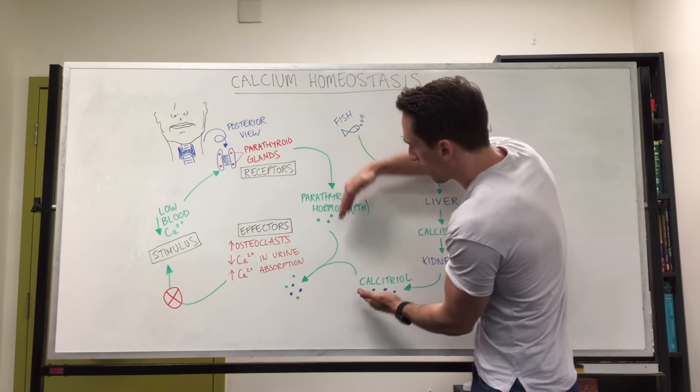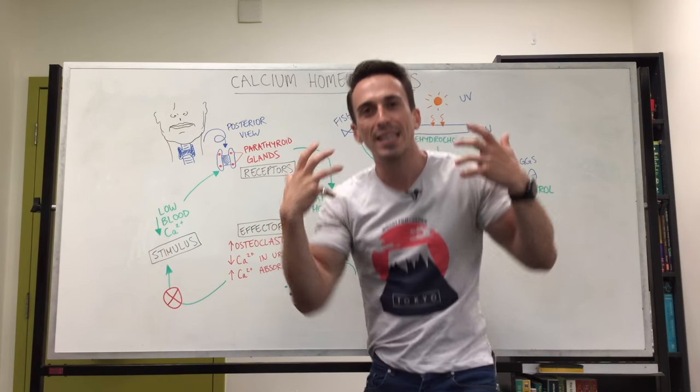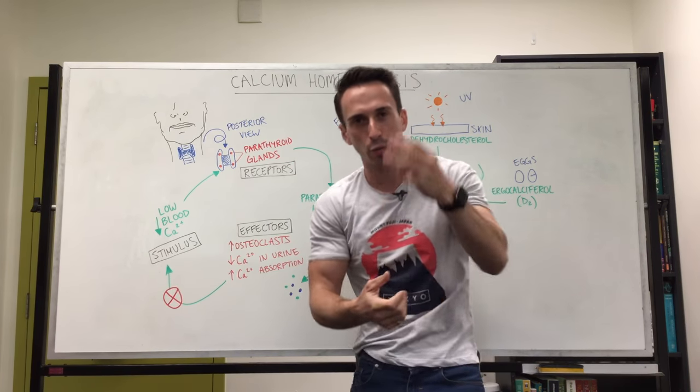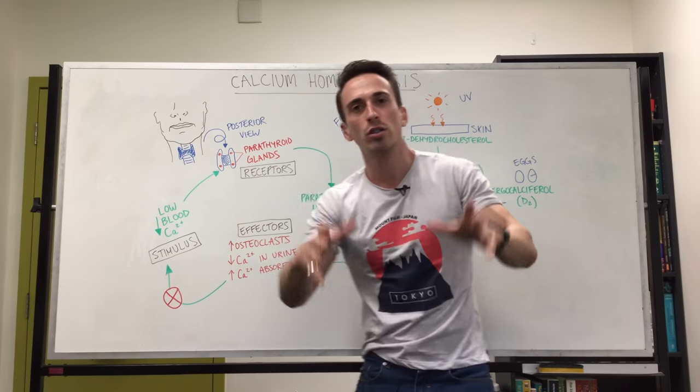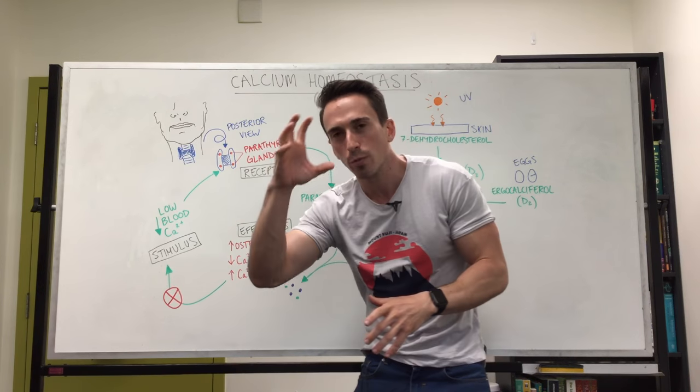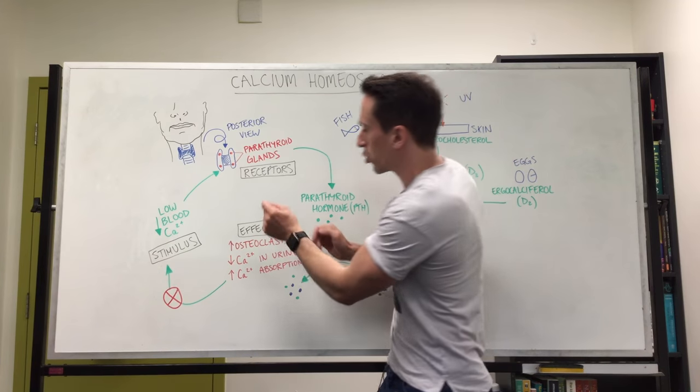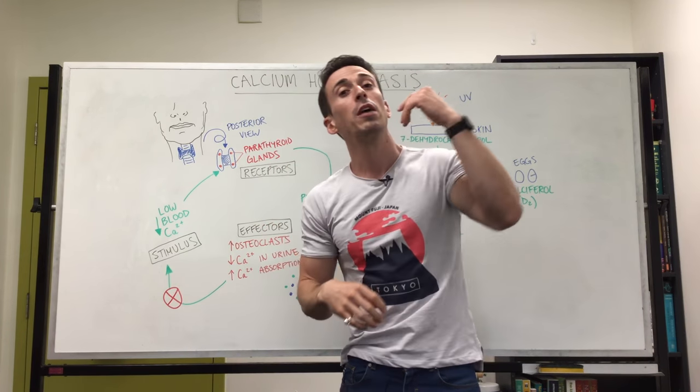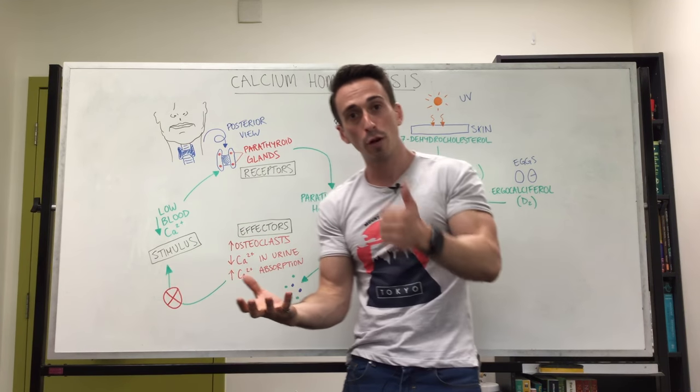Calcitriol together with parathyroid hormone have a synergistic relationship. So together they do something very special, three important things. Together they increase the activity of osteoclasts. Osteo means bone, clast in this scenario is talking about crushing. So parathyroid hormone, calcitriol trigger osteoclasts to break bone down. If they break bone down they release calcium into the blood. Perfect.